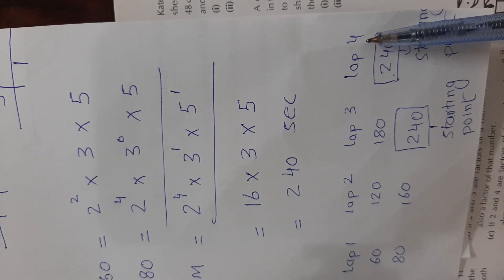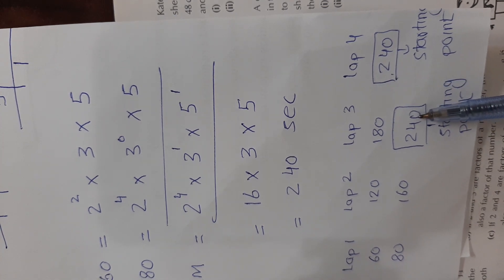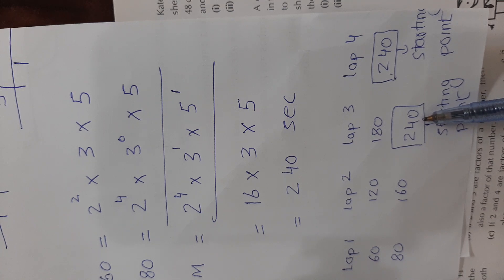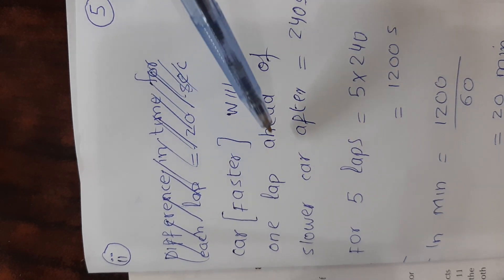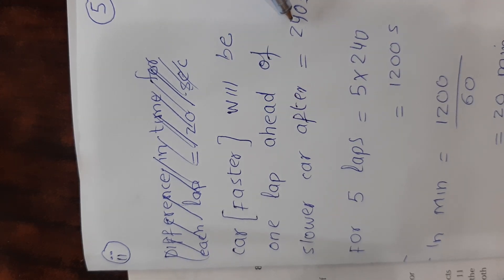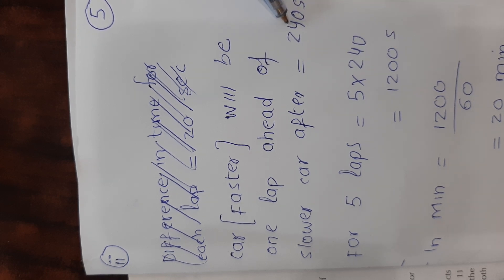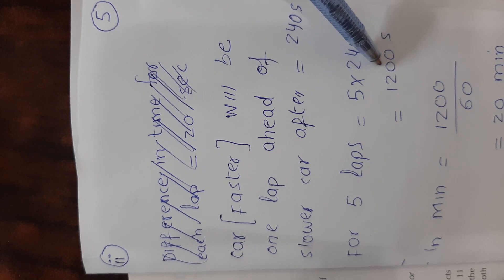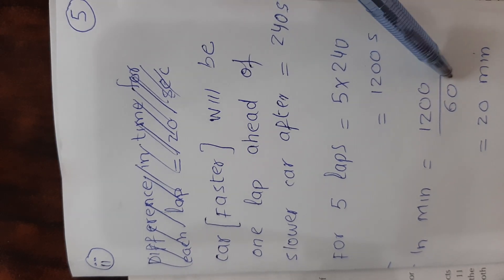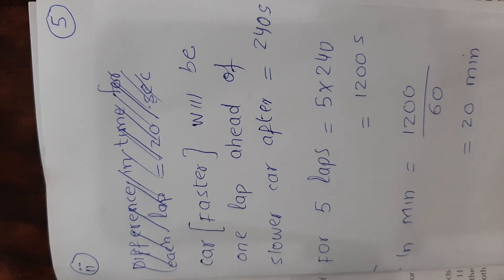After 240 seconds, the difference is 1 lap. If 1 lap difference takes 240 seconds, then a 5-lap difference will take 240 × 5 = 1200 seconds. Converting to minutes: 1200 ÷ 60 = 20 minutes.